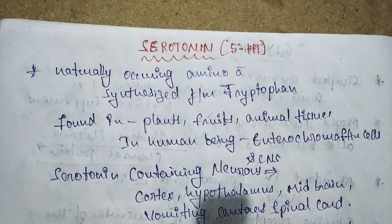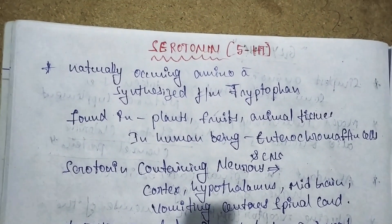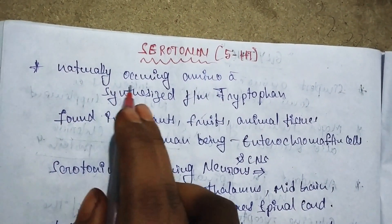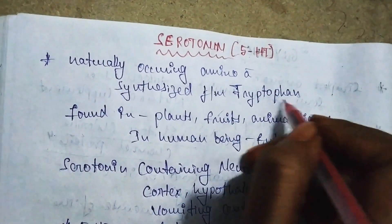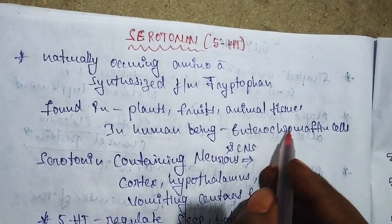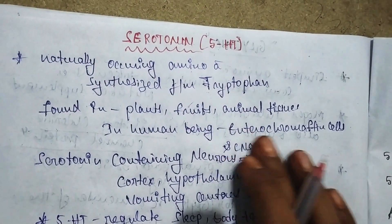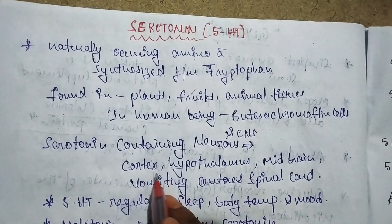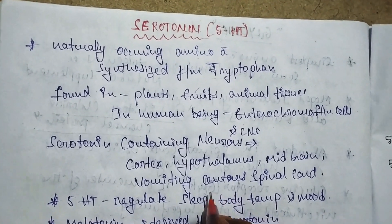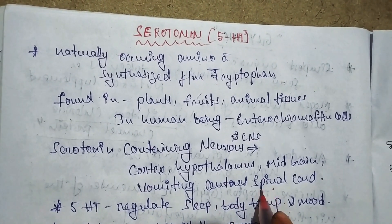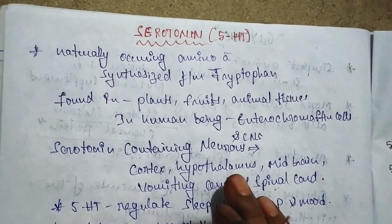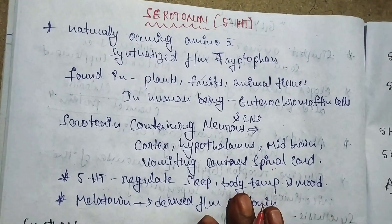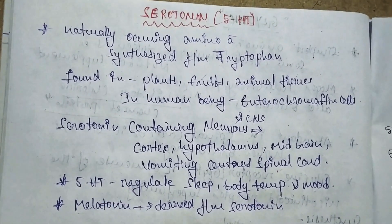The next neurotransmitter is serotonin or 5-HT. 5-HT means 5-hydroxy tryptophan or serotonin. It is a type of amino acid synthesized from the tryptophan amino acid. It is found in plants, fruits, and mammalian tissues. In human beings, there are enterochromaffin cells. Serotonin-containing neurons are in the cortex, hypothalamus, midbrain, vomiting centers (CTZ or chemotrigger zones), and spinal cord. 5-HT regulates sleep, body temperature, and mood.